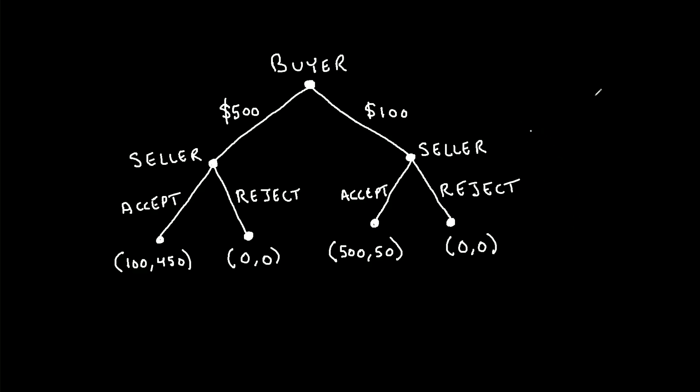And this type of sequential moves game is also referred to as an extensive form game. So one way to solve this type of game is by using a technique known as backward induction.